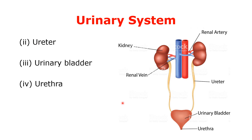Next is the urethra. Urethra is a canal through which urine passes from the bladder to the outside of the body. It differs in size in males and females: the male urethra is about 20 cm in length whereas the female urethra is about 4 cm in length. A sphincter is present in both male and female urethra which controls the flow of urine outside the body.